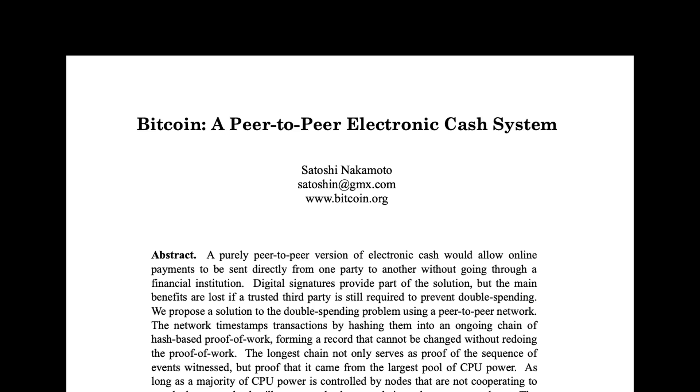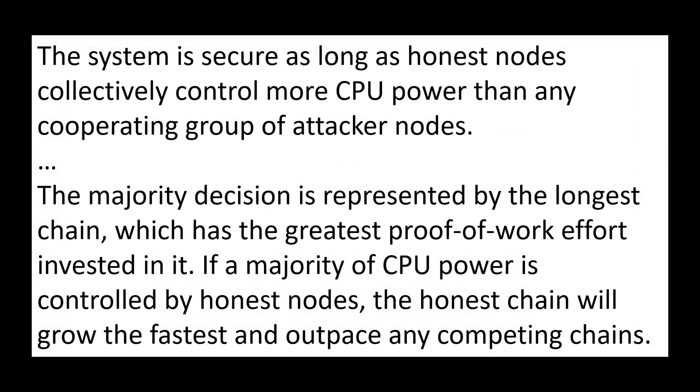In that original paper, already on the first page, Nakamoto claims that Bitcoin is secure as long as more than half of the mining power is controlled by honest miners. This way the longest chain grows fastest, and attackers stand no chance.